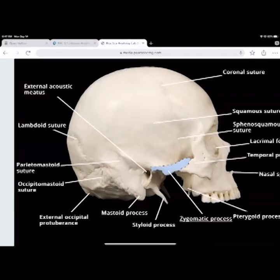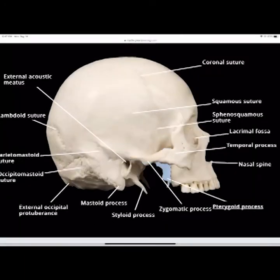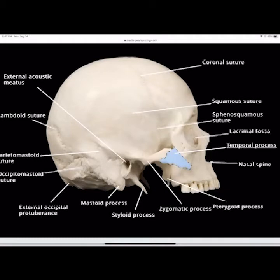The zygomatic process and zygomatic arch — you can see why the side of the skull breaks first when it's hit. The pterygoid process is from the sphenoid bone. The nasal spine is that point from the very inferior part of the nasal area. The temporal process of the zygomatic bone extends into the zygomatic arch.